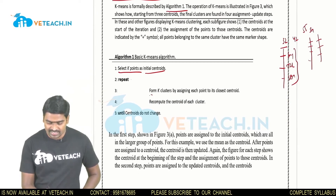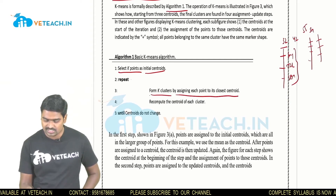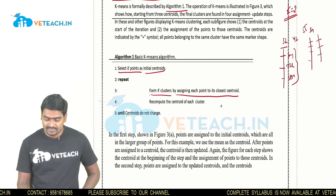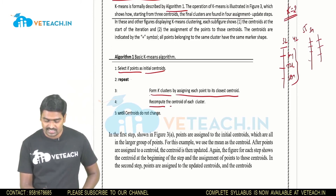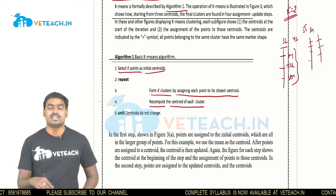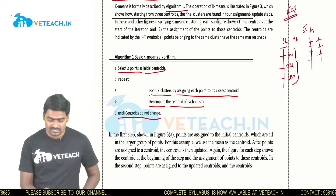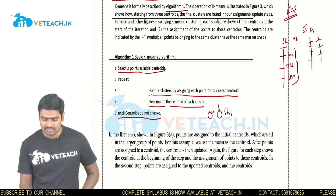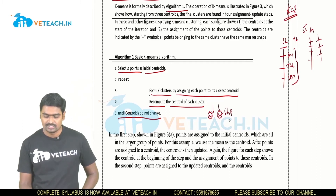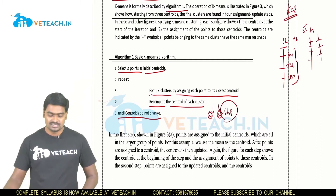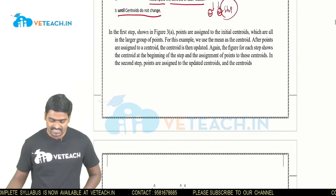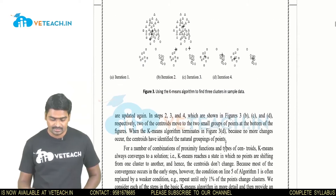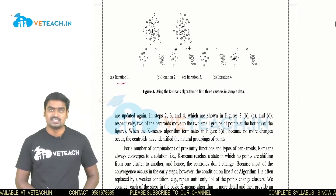K-Means is formally described as: (1) Select k points as the initial centroids. (2) Repeat — form k clusters by assigning each point to its closest centroid. For example, if k equals 2. (3) Recompute the centroid of each cluster. (4) Until the centroids do not change — for example, if two centroids are both 12, we stop. In figure A, iteration one shows points assigned to the initial centroids.